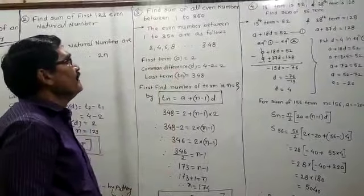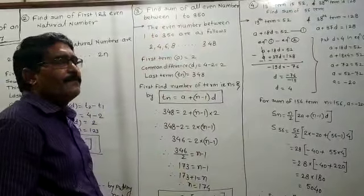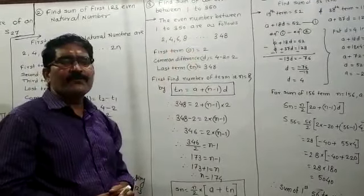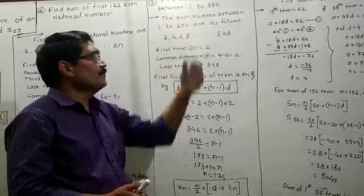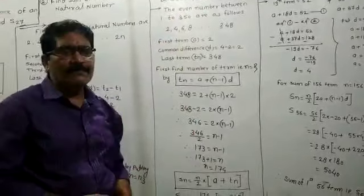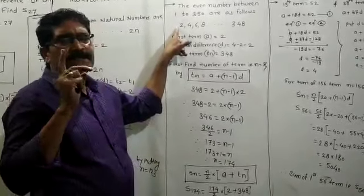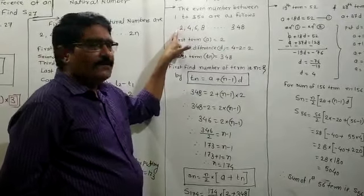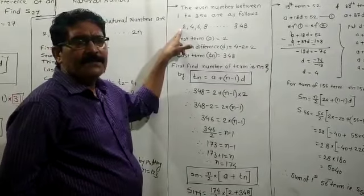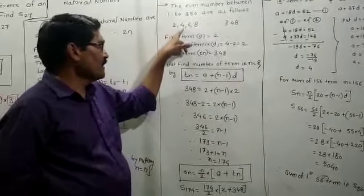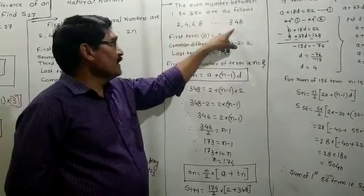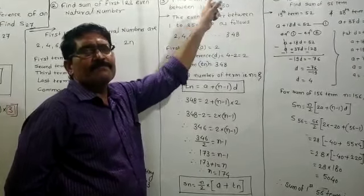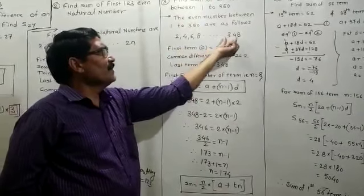Find the sum of all even numbers between 1 and 350. From 1 to 350, we need to figure out how many even numbers there are. The even numbers start at 2, with a common difference of 2: 2, 4, 6, 8, and so on. Since the question says 'between' 1 and 350, we exclude 350 itself even though it is even. So the last number is 348.